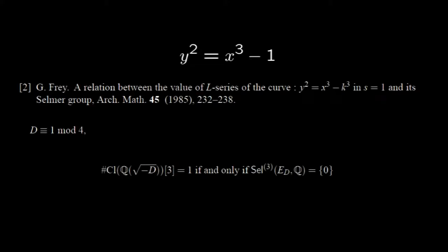In 1985, Frey proved in Reference 2 that if d is a square-free integer congruent to 1 mod 4, then the 3-part of the class group of the associated quadratic field is trivial if and only if its 3-Selmer group is trivial.